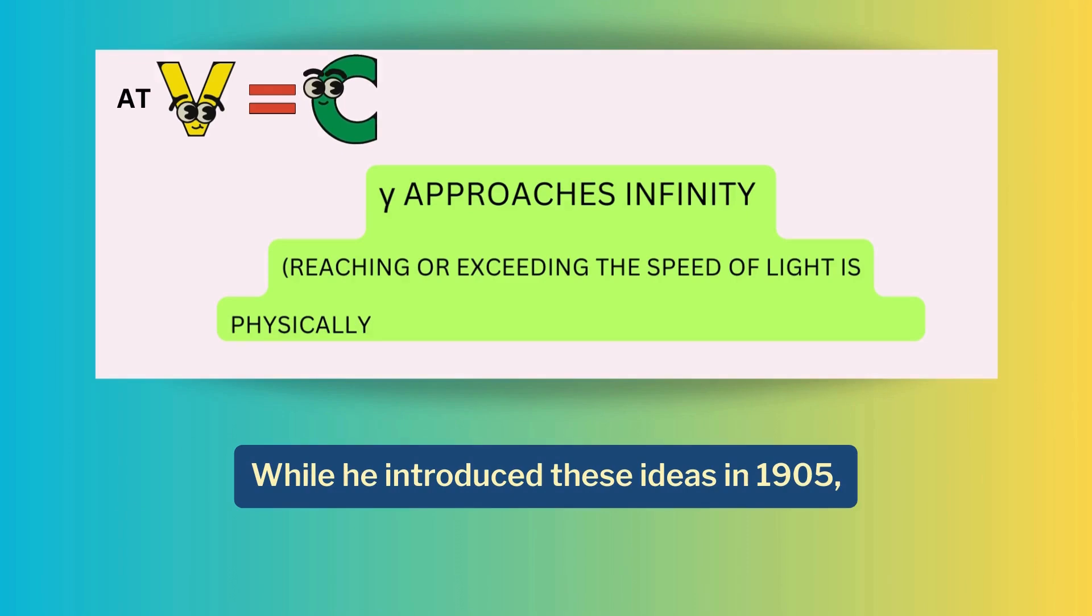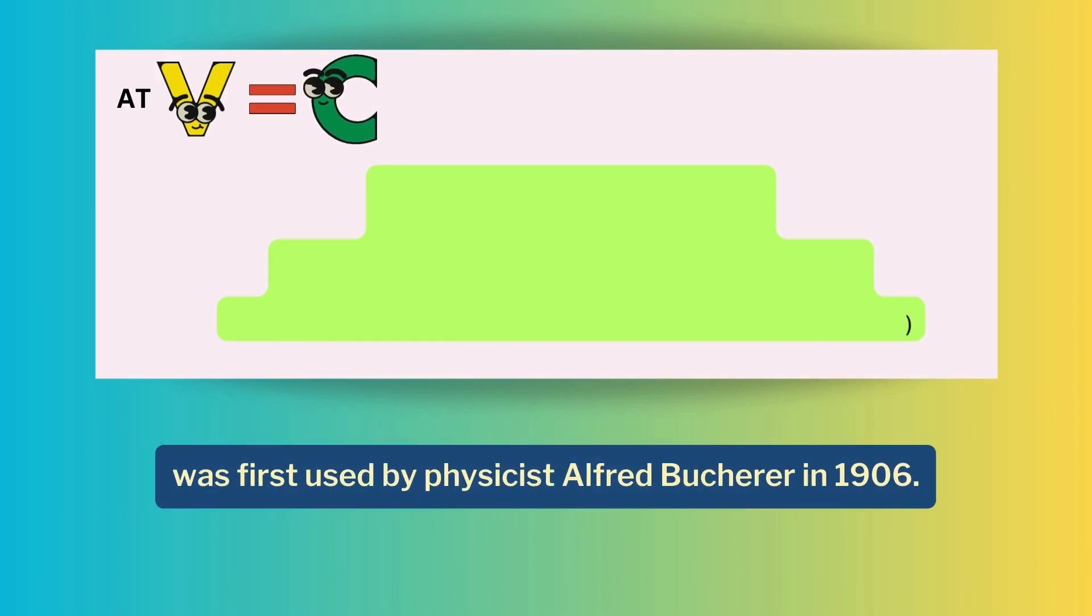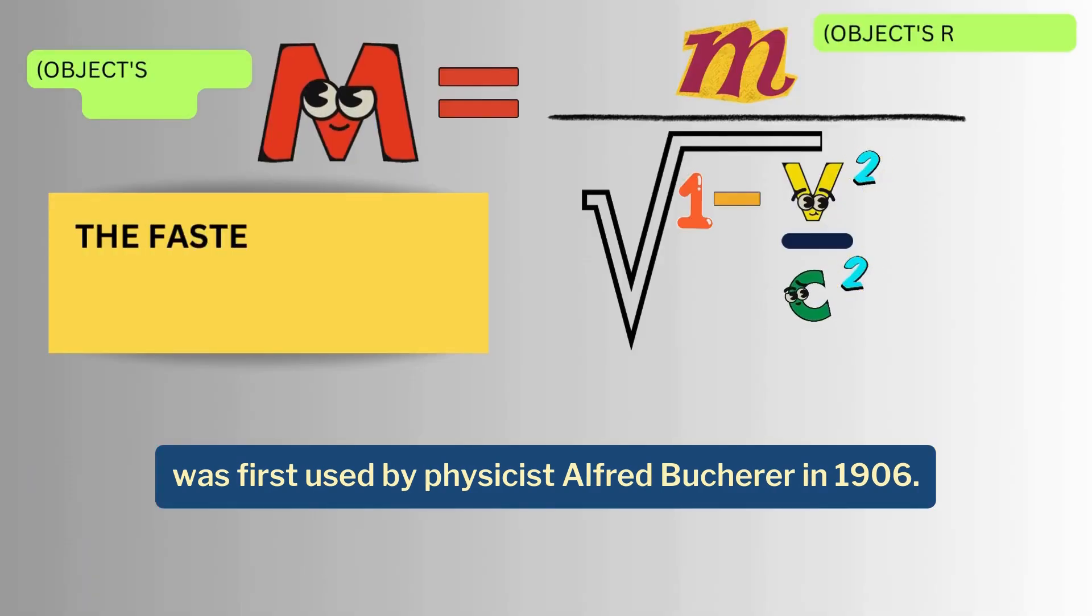While he introduced these ideas in 1905, the term theory of relativity was first used by physicist Alfred Bucherer in 1906.